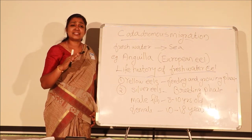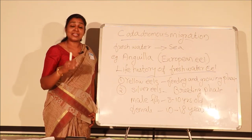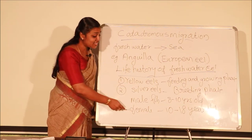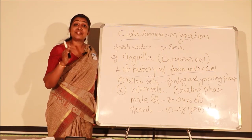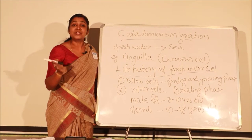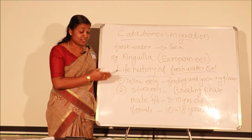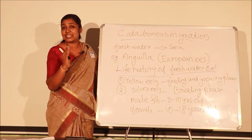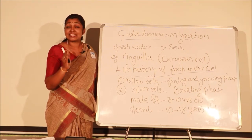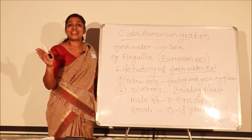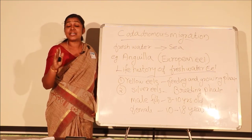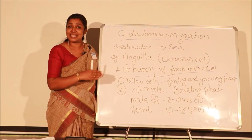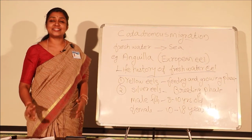The European eel can be observed in two colors — the yellow eel and the silver eel. The yellow eel is the larval or young stage. This young eel lives in freshwater: males for 8 to 10 years, females for 10 to 18 years, with a yellow body color. After this period, the color slowly changes from yellow to silver, indicating they are ready to migrate, as secondary sexual characters develop in the body.